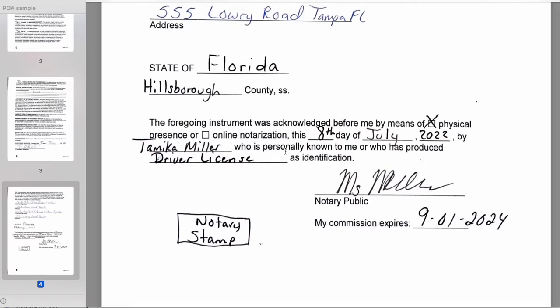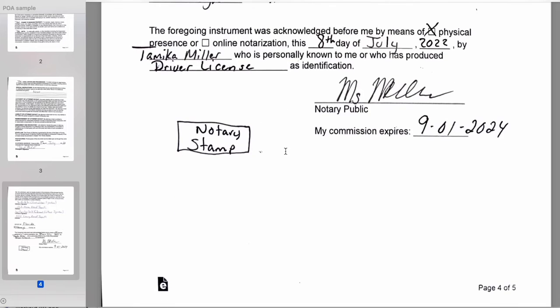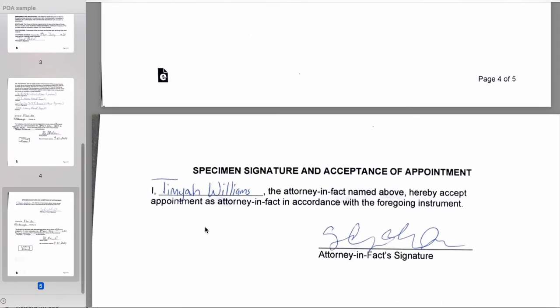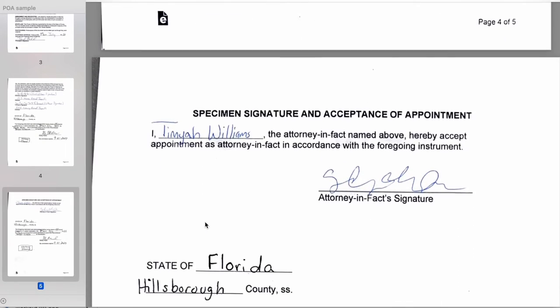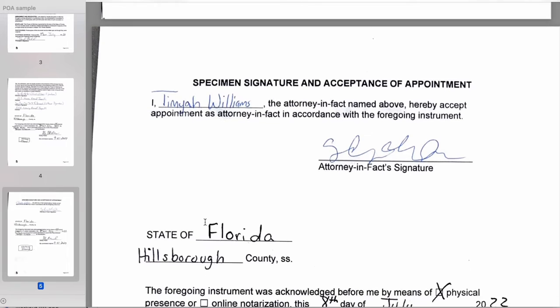As a notary, you're going to sign your name, put your commission expiration date, and stamp. Then keep going.